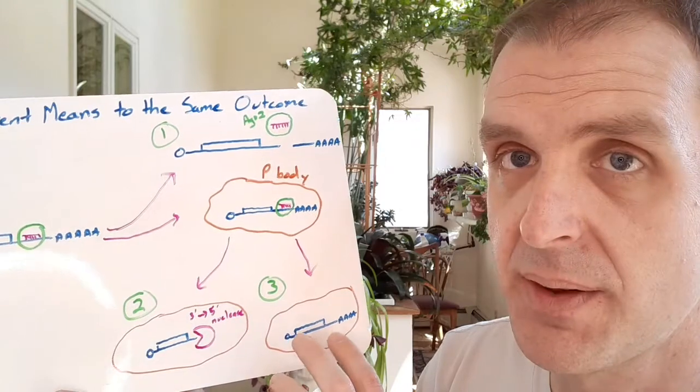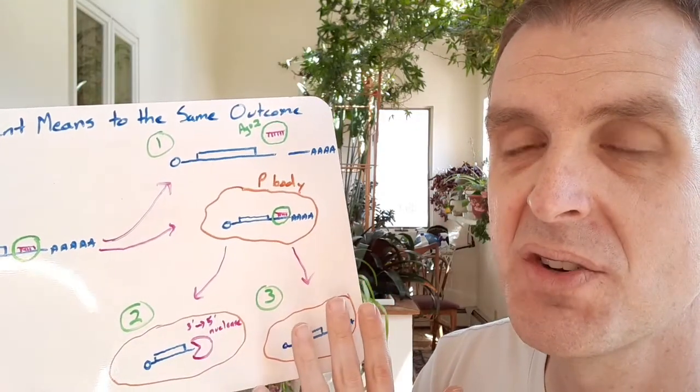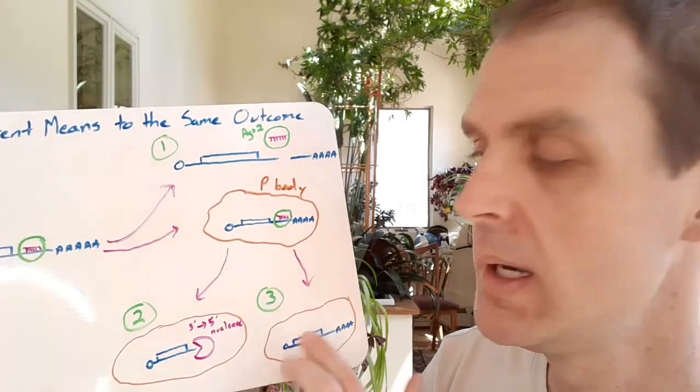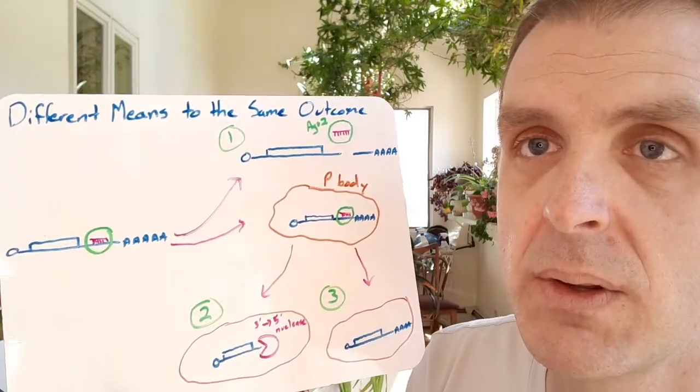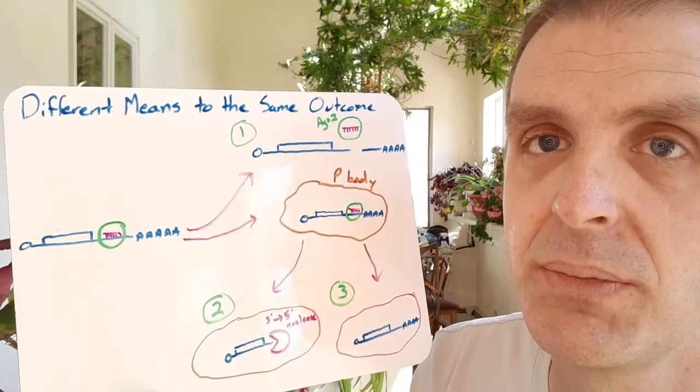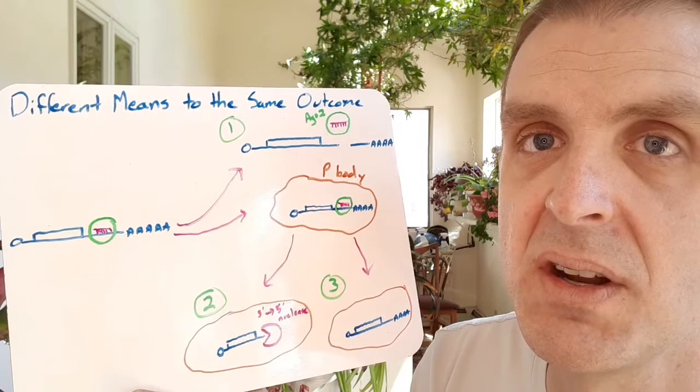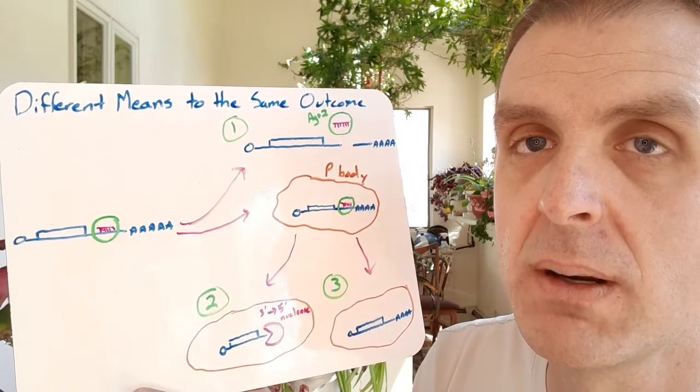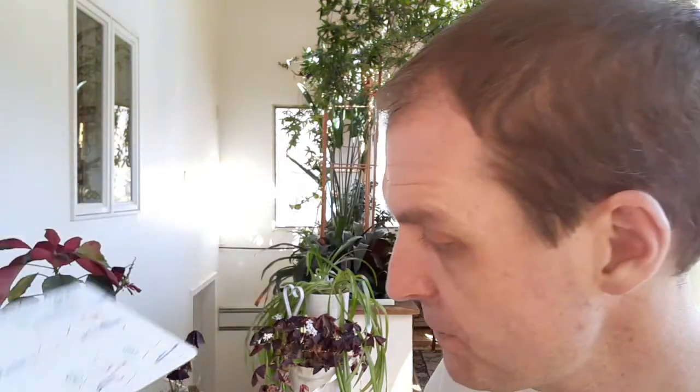So that's a third thing that can happen. You can have stalled or storage of mRNAs so that you don't get translation. So either way you look at it, whether it's the degradation, two types of degradation, or the stalling of the translation, you're going to be preventing protein from being made as much as it would had you not had any microRNAs around.